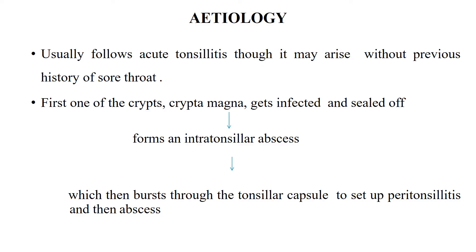Peritonsillar abscess usually follows acute tonsillitis, though it may arise de novo without previous history of sore throats. One of the tonsillar crypts, usually the crypta magna, gets infected and sealed off. It forms an intratonsillar abscess which then bursts through the tonsillar capsule to set up peritonsillitis and then an abscess.